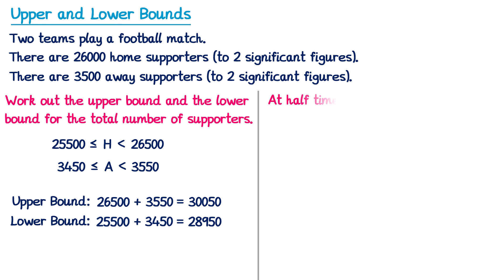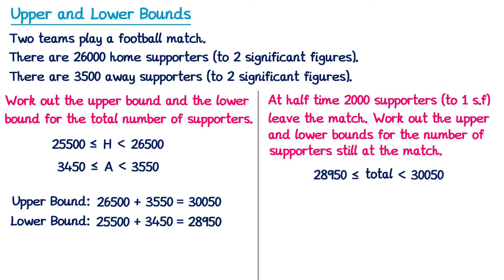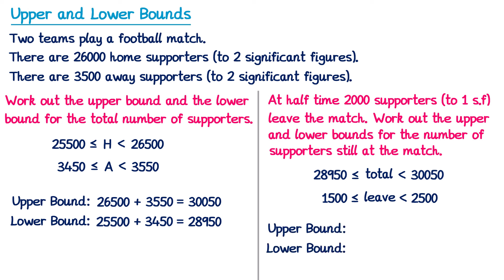A second part of this question might say: at half time, 2,000 supporters — to one significant figure — leave the match. We need to work out the upper and lower bounds for the number of supporters still at the match. We already know the total is between 28,950 and 30,050. The supporters leaving must be between 1,500 and 2,500. Here we're going to do a subtraction: the total amount subtract the number that leave.